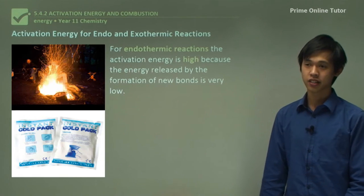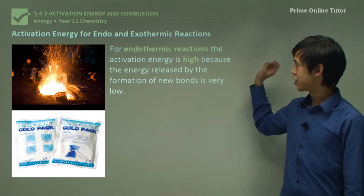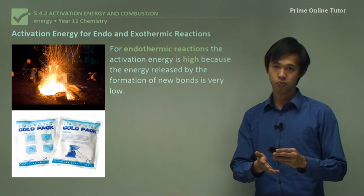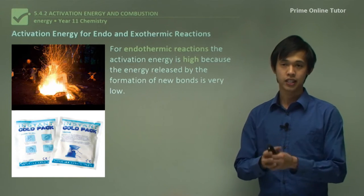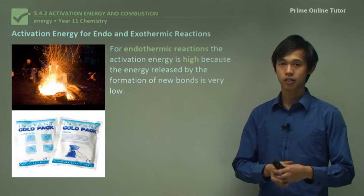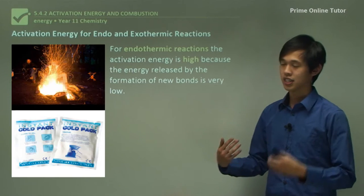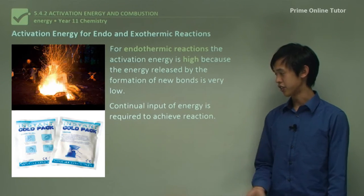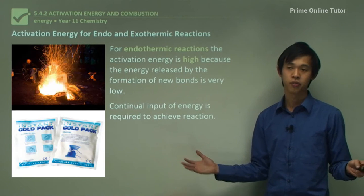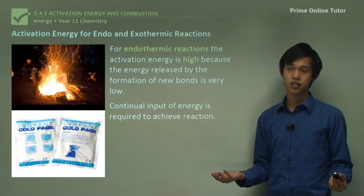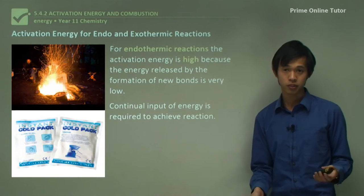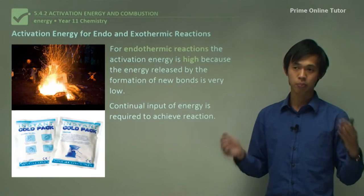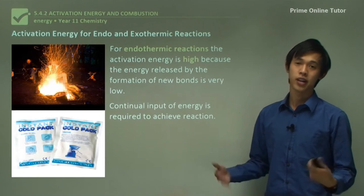For endothermic reactions, which absorb energy, the activation energy is high because the energy released by the formation of new bonds is very low. When you break up the chemicals in an endothermic process and put them back together in a new way, the energy released from that new formation of compounds is very low — so it doesn't have enough energy to continue breaking bonds, and you have to constantly put energy in. Continual input of energy is required to achieve a complete reaction. For example, electrolyzing water to split it into hydrogen and oxygen requires continually pumping electricity into it — that's why it's an endothermic process.